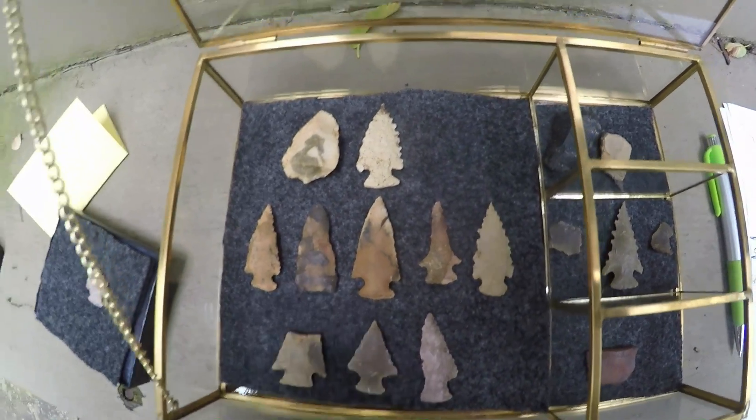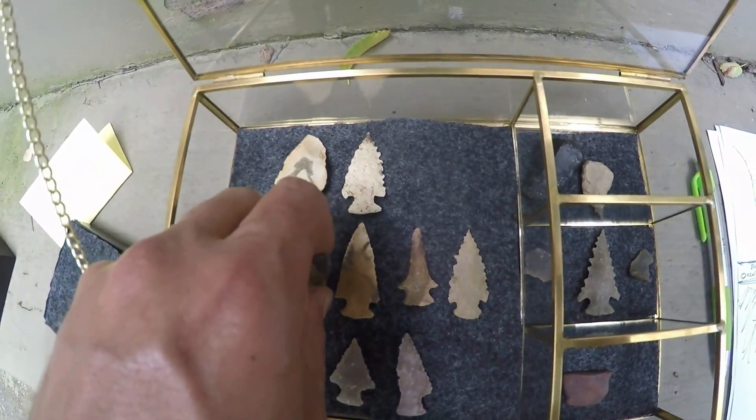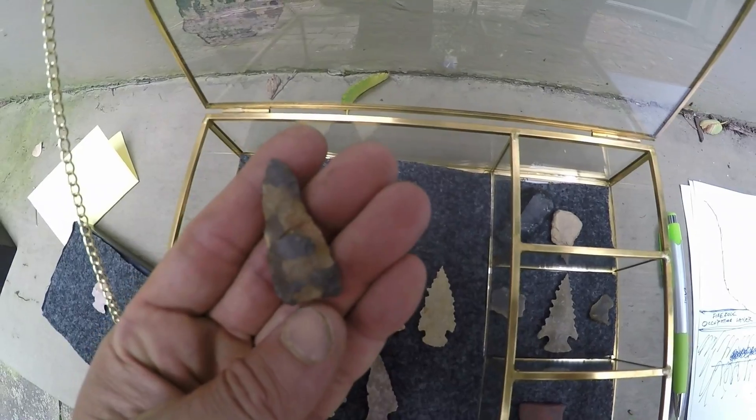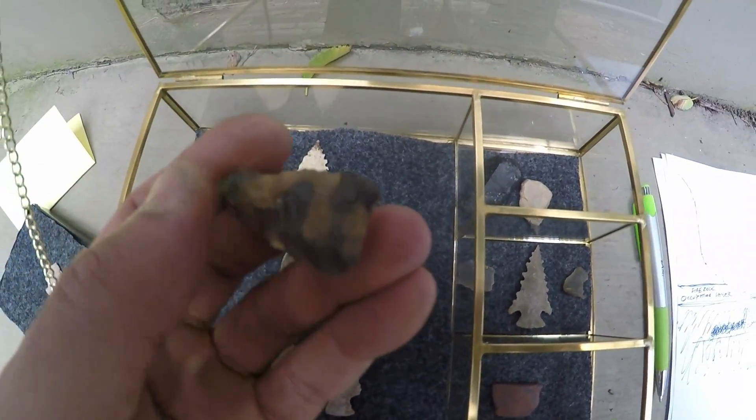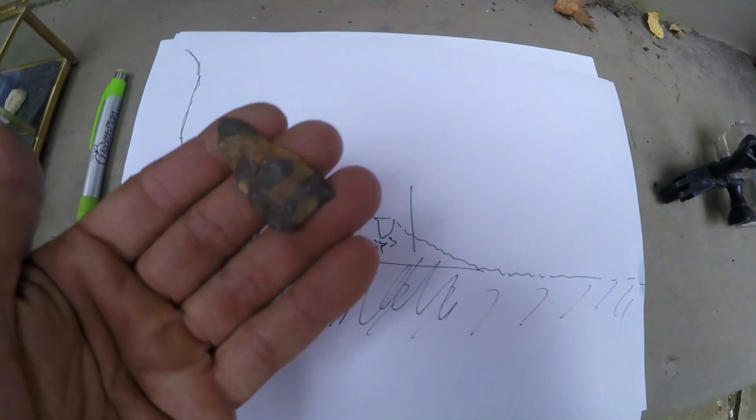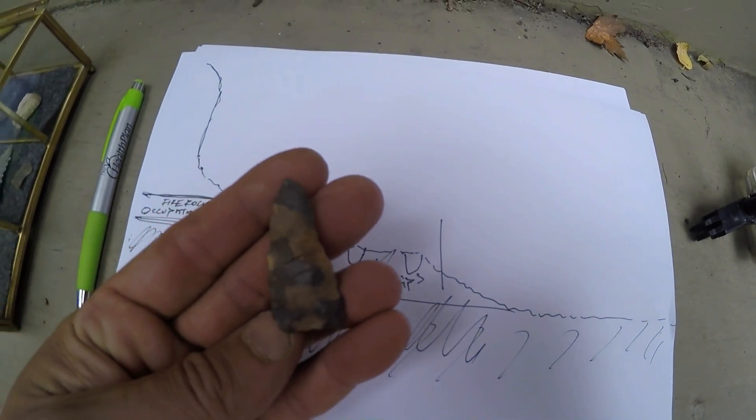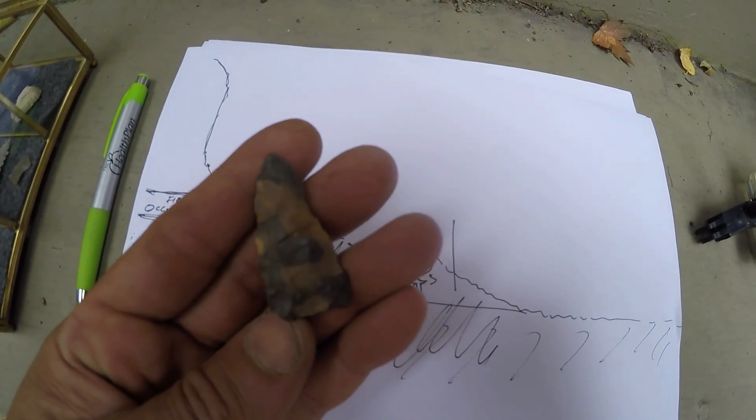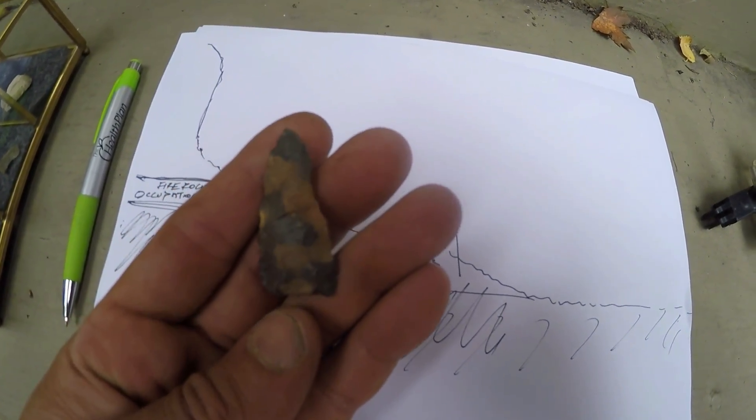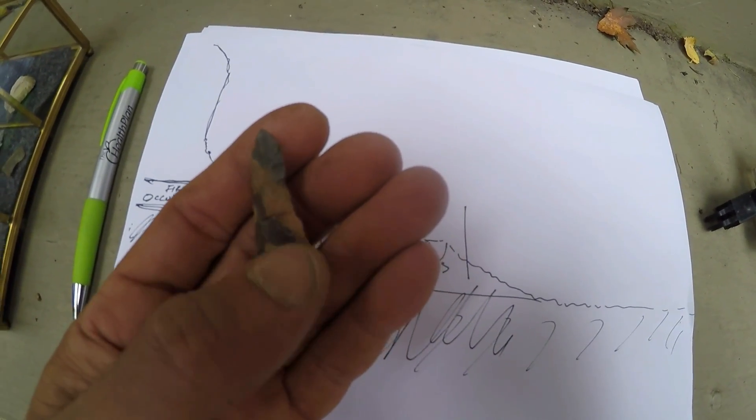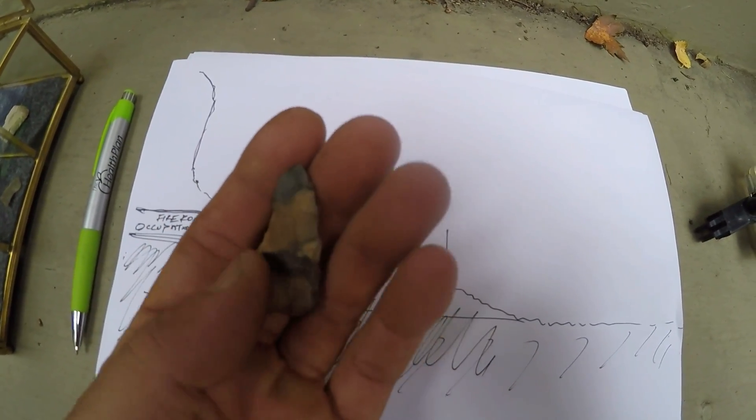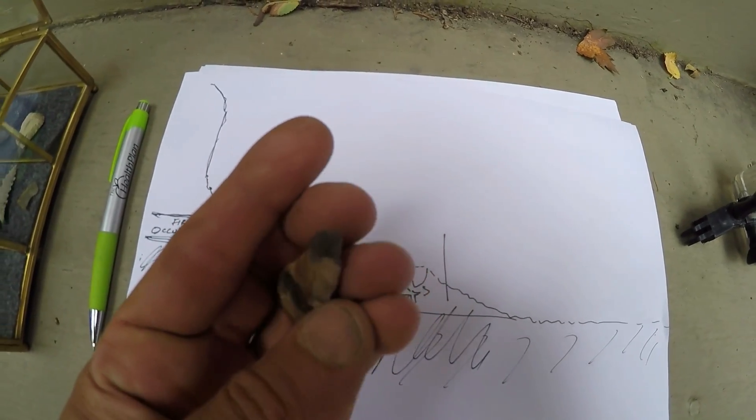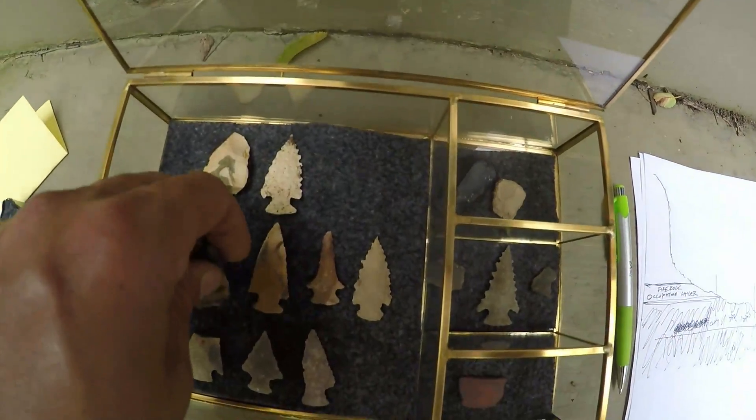A fluted point - it's got basal grinding. It's fluted up to right there which is over half the blade. It's got the form. Beautiful material that's gray and later brown swirled. It's not the greatest paleo but you look at it with these points, it just shows how old they are.